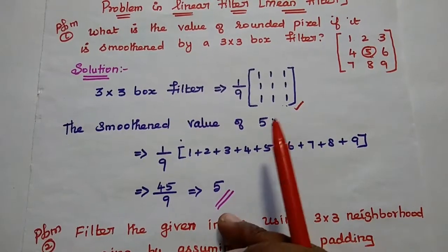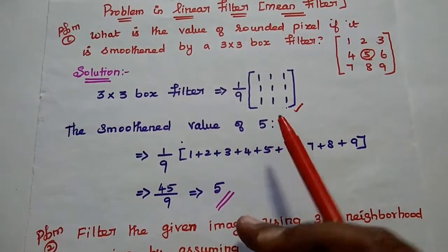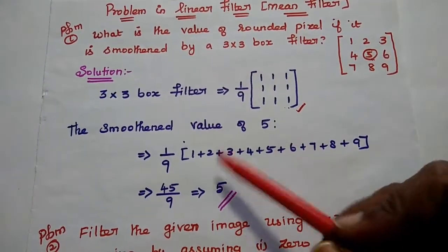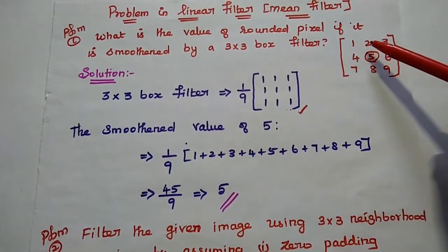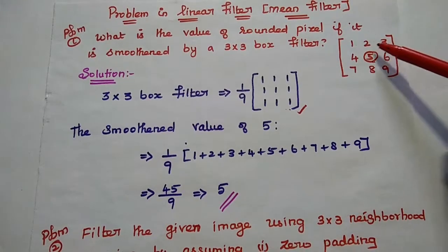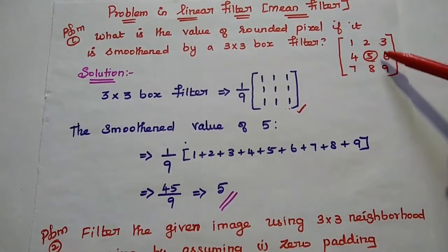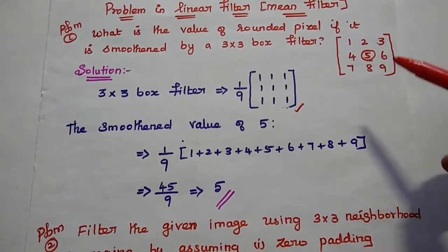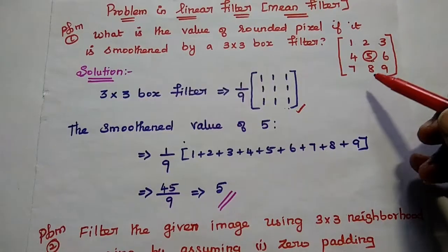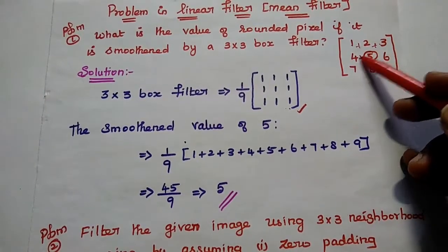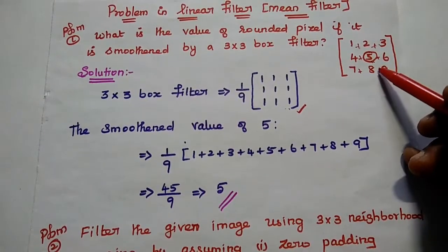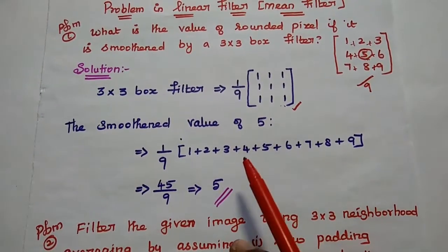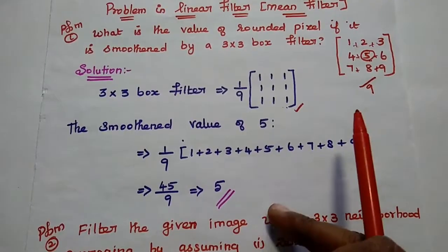When we place this 3 by 3 matrix of 1s on the image data, we get 1×1 + 1×2 + 1×3, and so on — all the values are multiplied by 1. So simply we can add the given image data values. Whatever image data is given, we are going to add all the values together and divide the sum by the total number of elements.